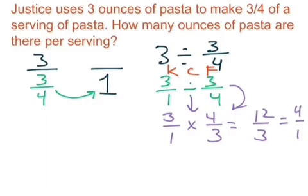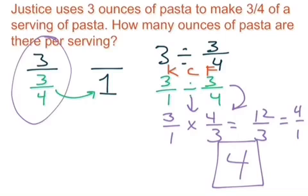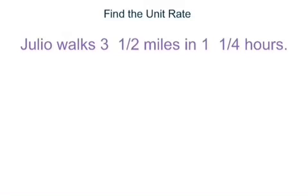3 goes into 12 four times and into itself once, and 4/1 would equal 4 right here. So Justice uses 3 ounces of pasta. How many would she do right there for a whole serving? And actually, mentally, we could put this together, of course. But always remembering that you can divide the numerator by the denominator to get that answer. Try this one on your own right here.